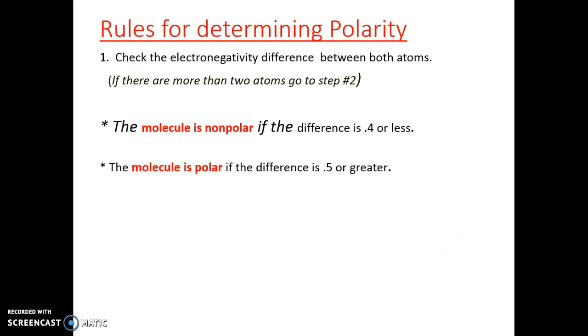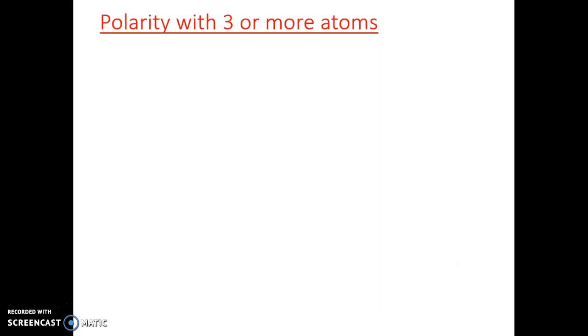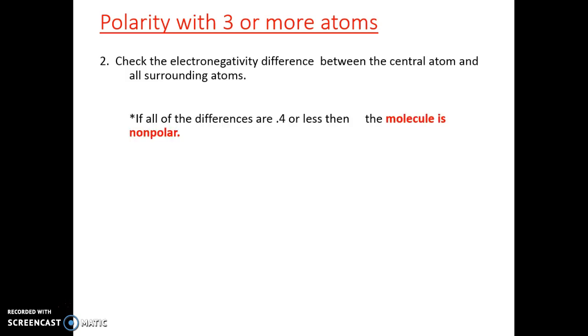Now, there are gradations of polar. There's slightly polar, and there's very polar. So again, a lot of things going on here. So rule two applies to things with three or more atoms. Again, we're checking the electronegativity, but we have to look at the central atom first and then check the surrounding atoms. If all the differences are 0.4 or less, then the molecule is nonpolar. If any electronegativity difference is 0.5 or greater, then we go to the next step and we have to do a little bit of work.